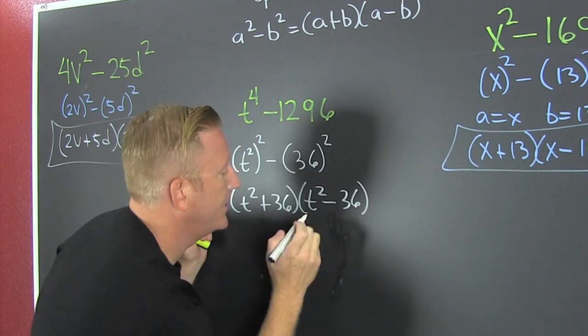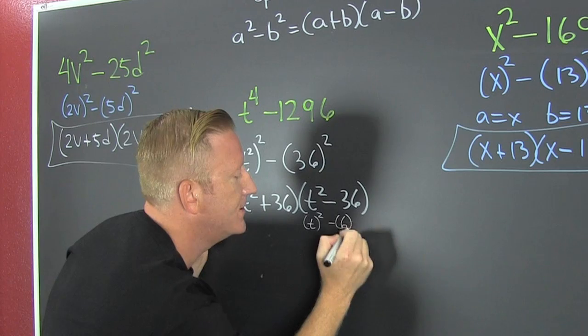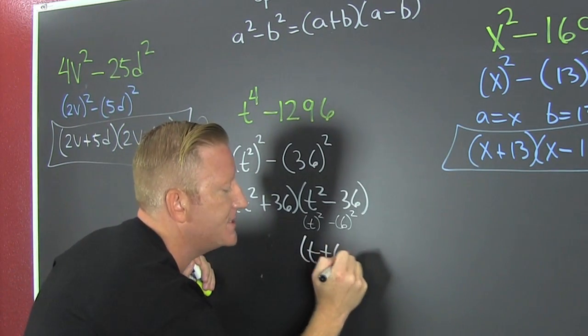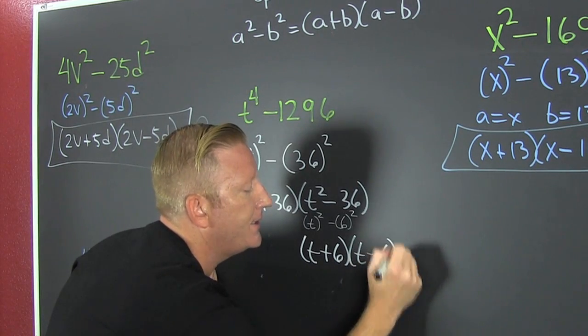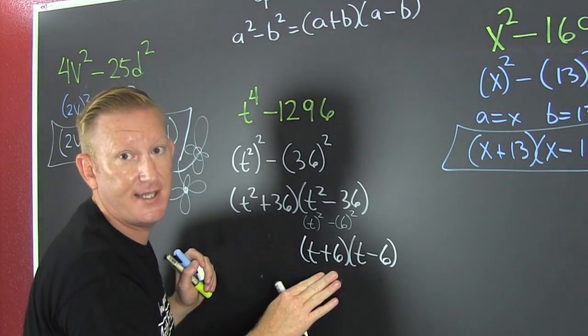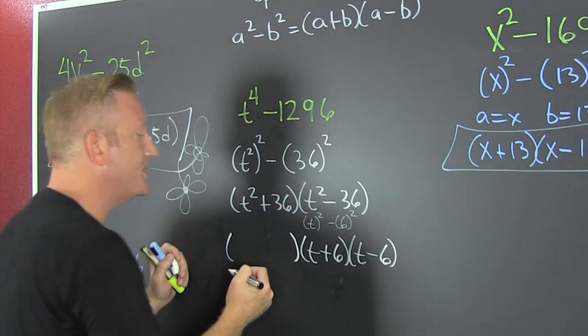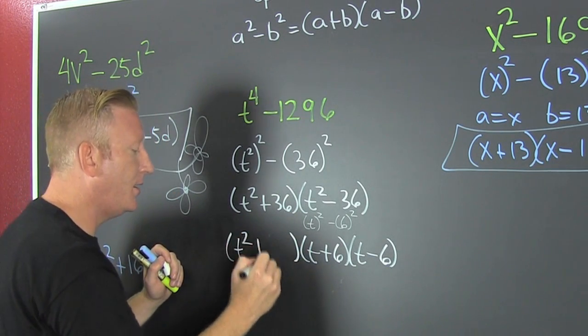This one? No, there's no sum of squares, at least not over the real numbers. But I do see that's t squared minus 6 squared. So then that's t plus 6 times t minus 6. My style is a plus b, a minus b.